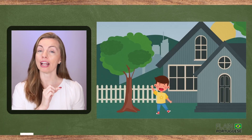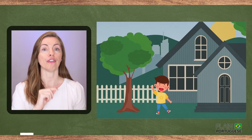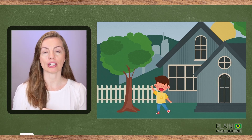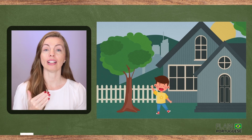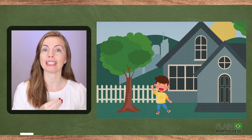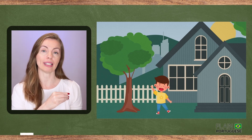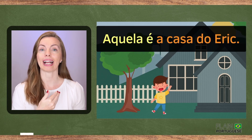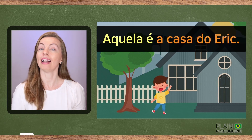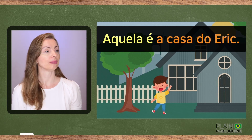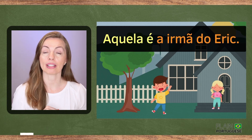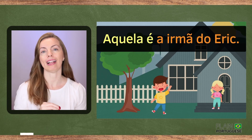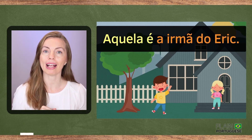That's Eric, and that's Eric's house. First change the word order and then use the preposition depending on the noun you are using. In this case we're going to use 'do': 'Aquela é a casa do Eric.' That's Eric's sister: 'Aquela é a irmã do Eric.'